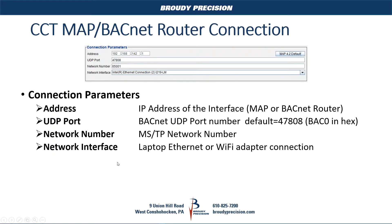The connection parameters have four fields: address, UDP port, network number, and network interface. The IP address is the address of the interface — whether it's the MAP gateway, a BACnet router, or the JACE. The UDP port is your BACnet port being used; the default standard port for BACnet is 47808, though you may need to change it based on your device's setup. The network number is your MSTP network number, not the BACnet IP network number. Your network interface is the connection from your laptop to that device, either a hard Ethernet connection or your Wi-Fi adapter.